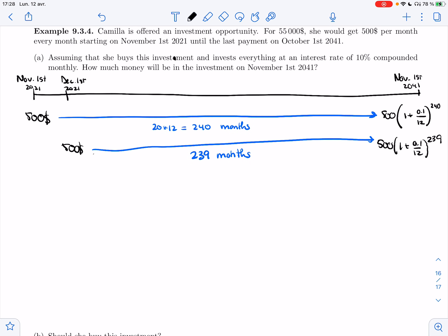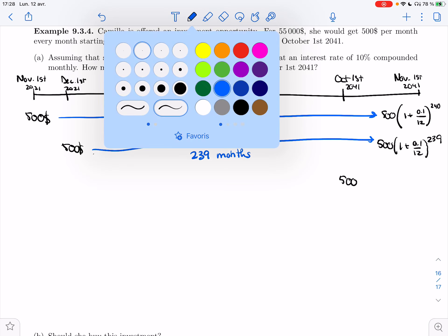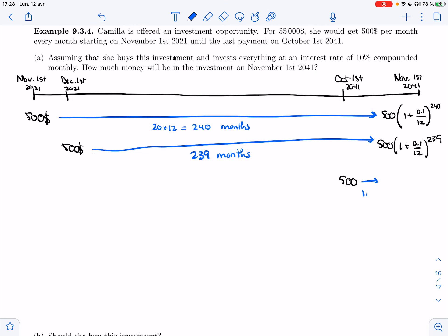And so on until the last payment is October 1st, 2041. So that's the last $500. It's only in the account for one month and so will not gain as much interest as the first few, of course, but it will still gain some interest because it's there from October 1st to November 1st. So let's add them all up.